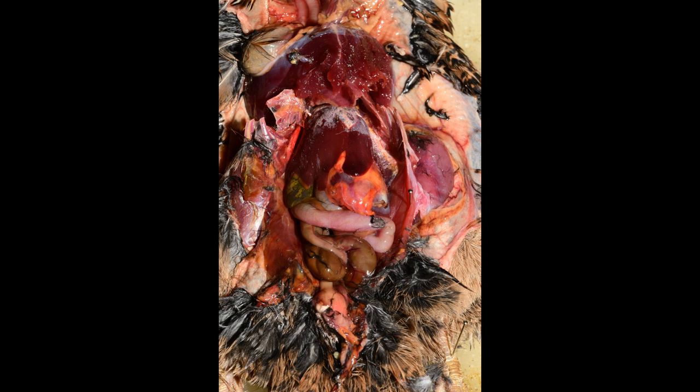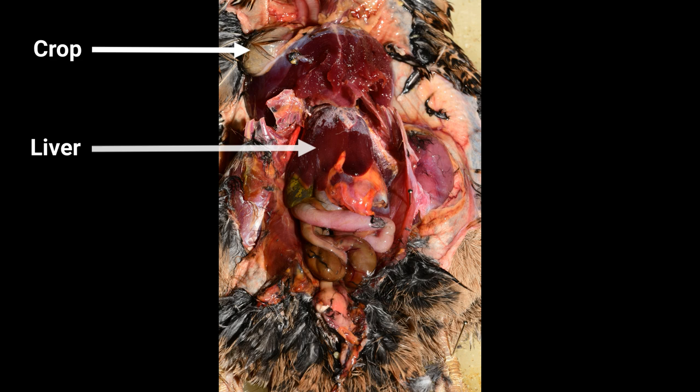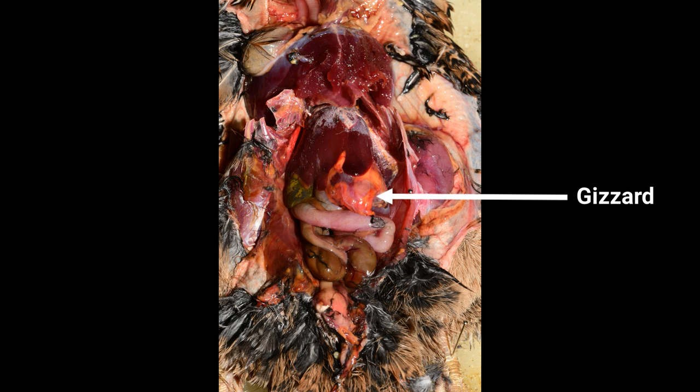The prepared abdominal cavity now reveals the crop, liver, large and small intestines, as well as the gizzard, and the small green gallbladder, the latter of which is lacking in some birds. The stomach is divided into the anterior glandular stomach and the posterior gizzard.